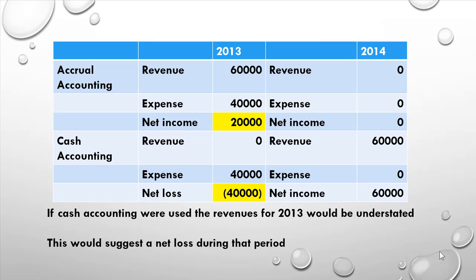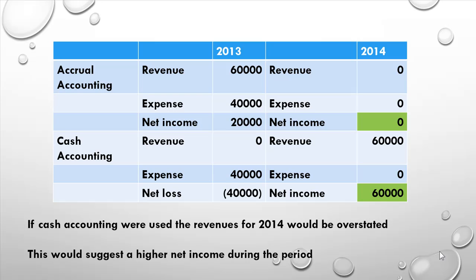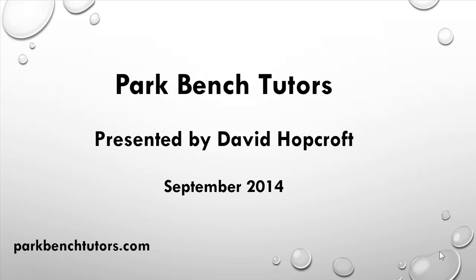Cash accounting would understate revenues for 2013, and similarly overstate revenues for 2014 with a net income of $60,000. Remember: in financial accounting for companies, we use accrual accounting, not cash accounting. That ends this short podcast on accruals, brought to you by Parkbench Tutors and presented by David Hopcroft. Thank you for watching and listening — we wish you success in your studies.